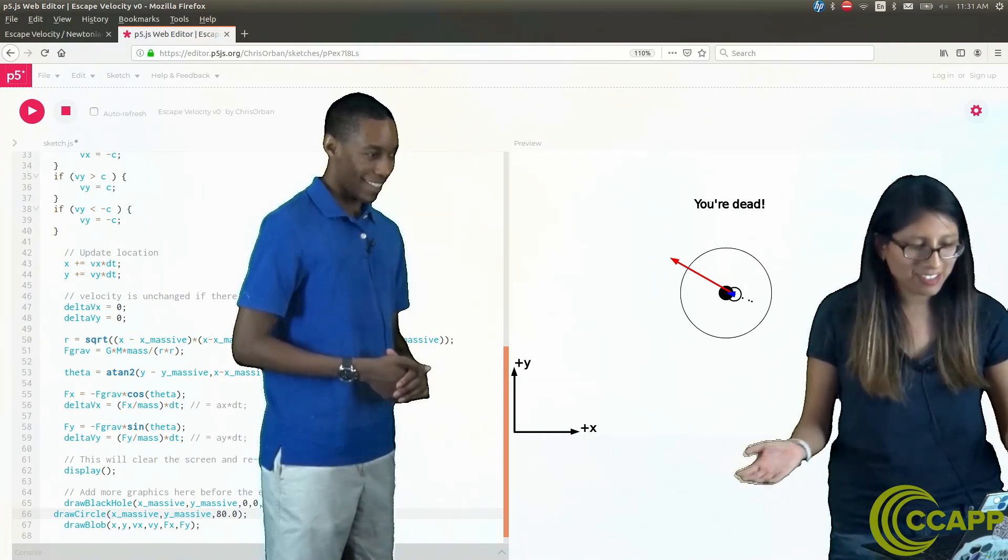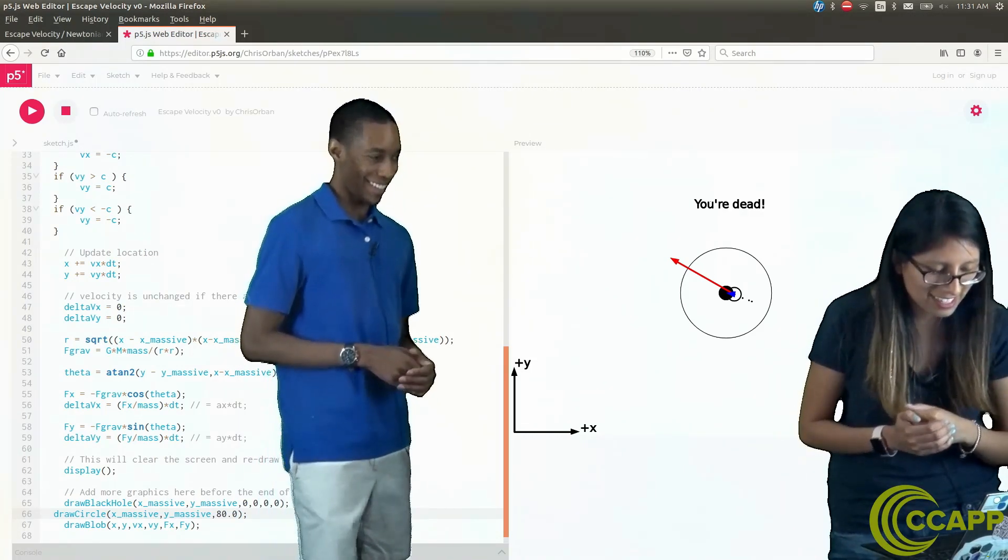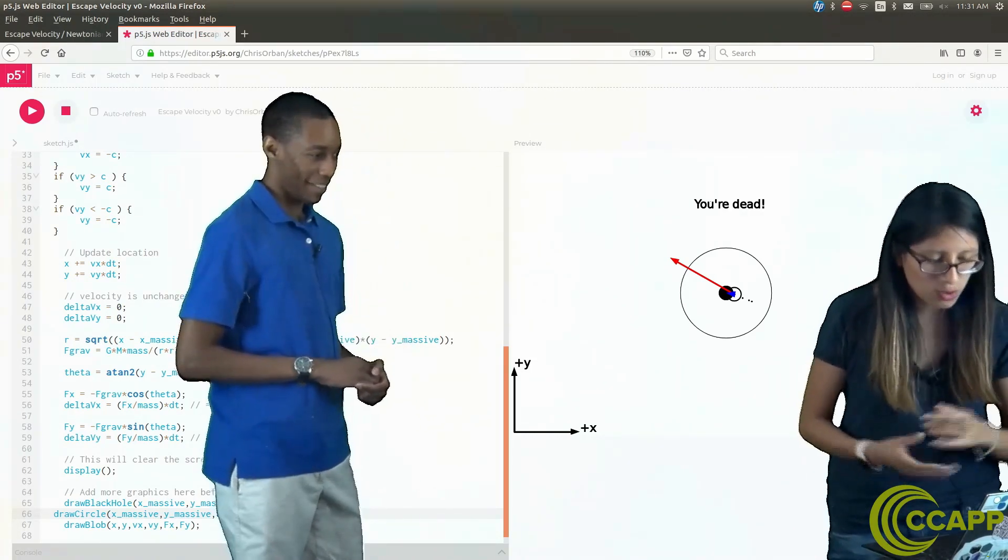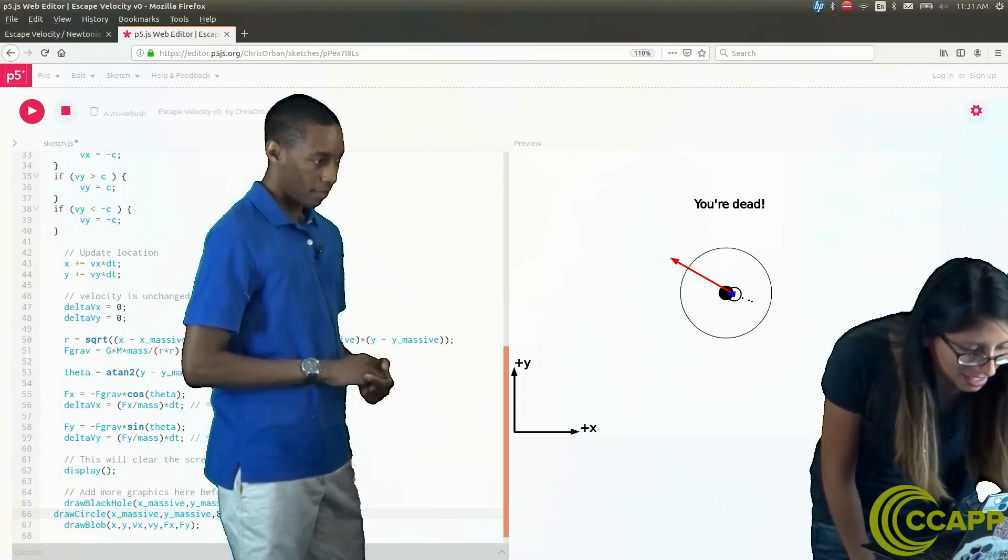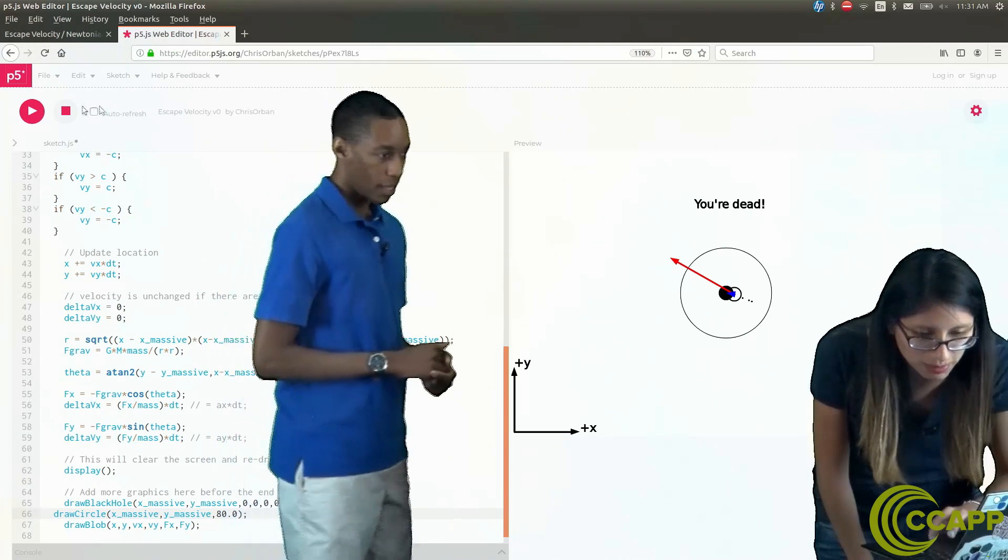Check that out. We were way inside the Schwarzschild radius and crashed inside. Let's press play again, let's replay it.